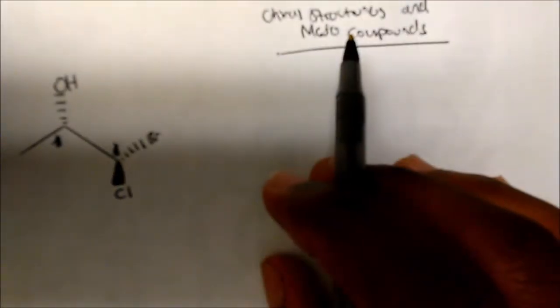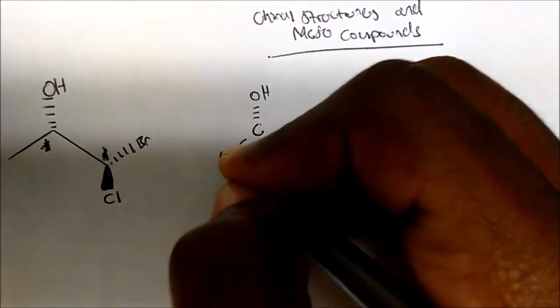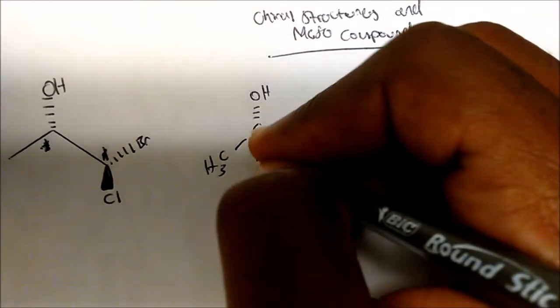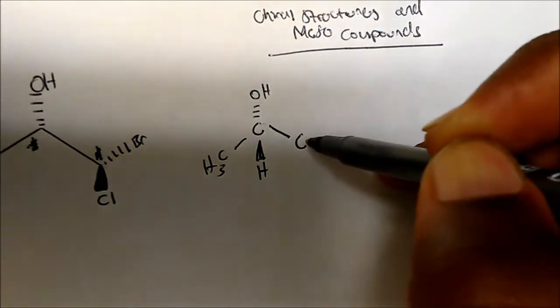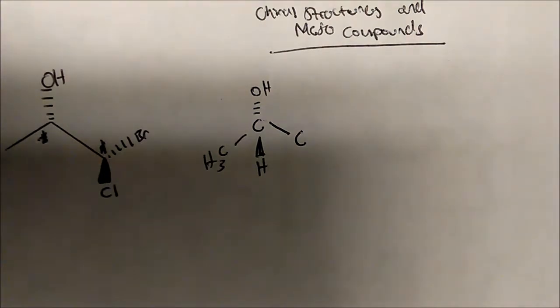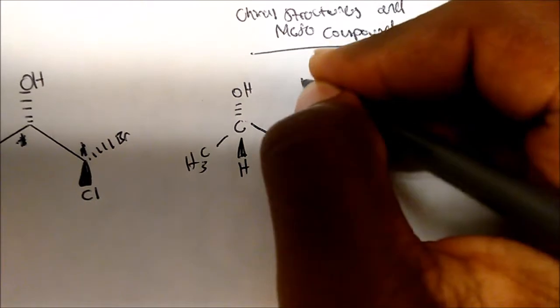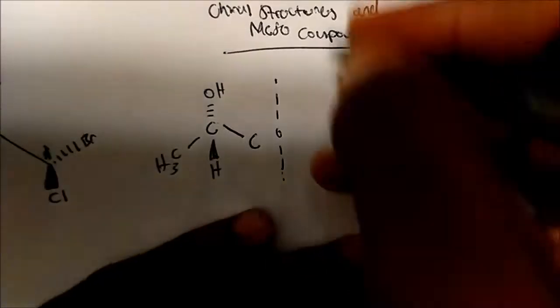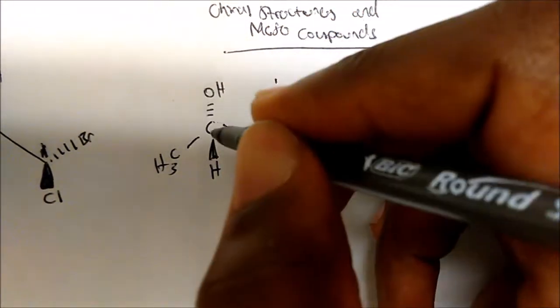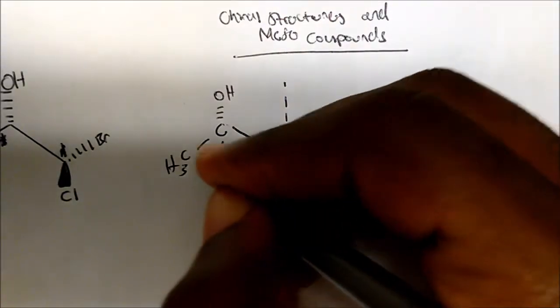Starting with this chiral carbon here, you can see I have a carbon bonded to an OH going away, a methyl group, and if the OH is going away, the hydrogen has to be coming out toward us in space, and then we have this chain going to the C. Notice that our lowest priority group is not going away from us, so we have to flip this molecule. The hydrogen has to jump one, two places.